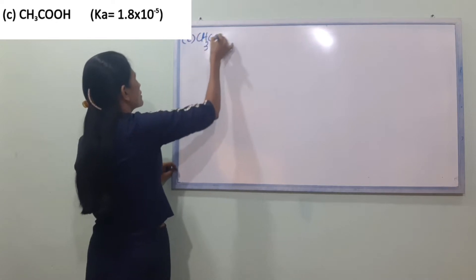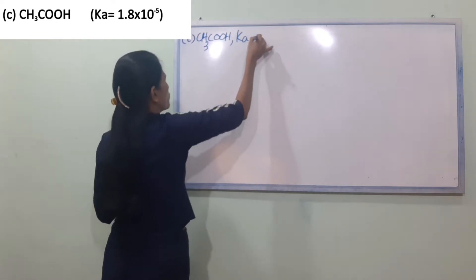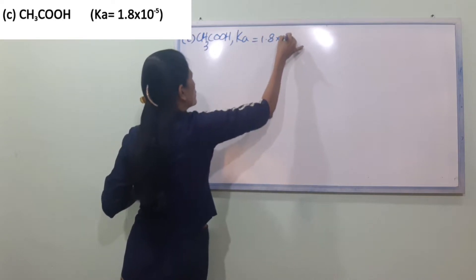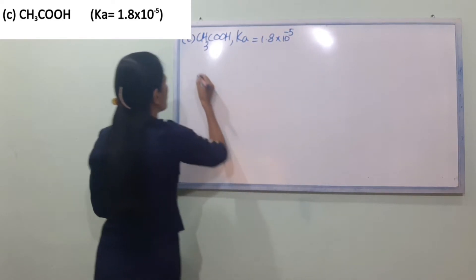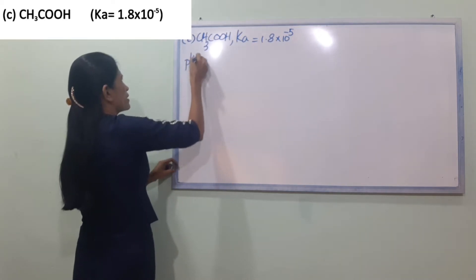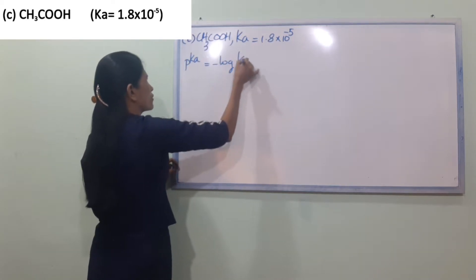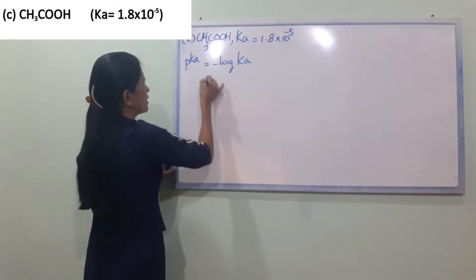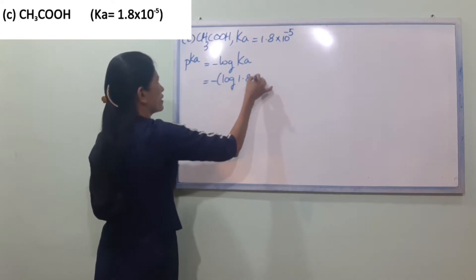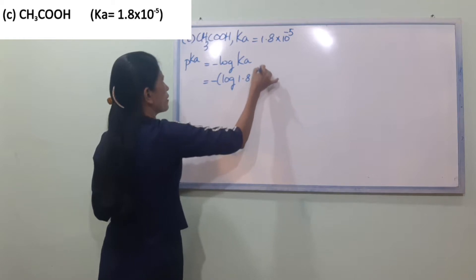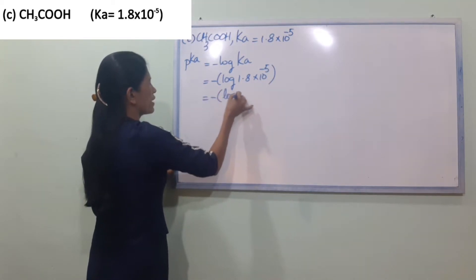For acetic acid, CH3COOH, Ka is equal to 1.8 into 10 power minus 5. PKA is equal to minus log Ka, which is minus log of 1.8 into 10 power minus 5.